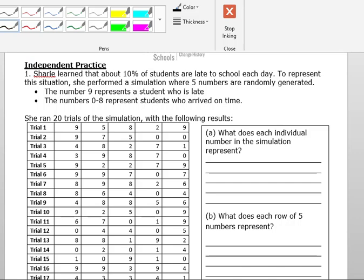So Sherry learned that about 10% of students are late to school each day. To represent this situation, she performed a simulation where five numbers are randomly generated. The number 9 represents a student who is late, and the numbers 0 through 8 represent students who arrived on time.